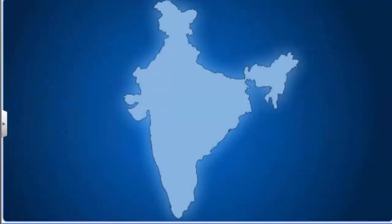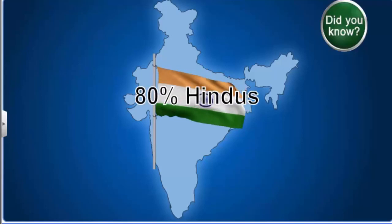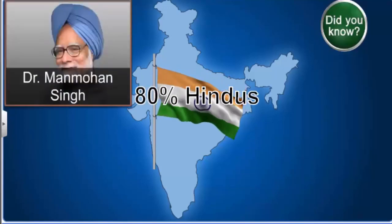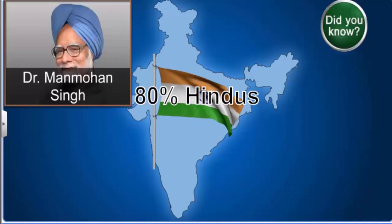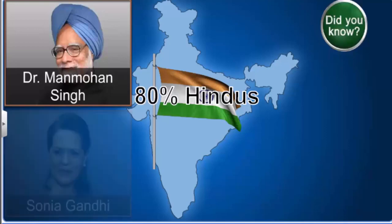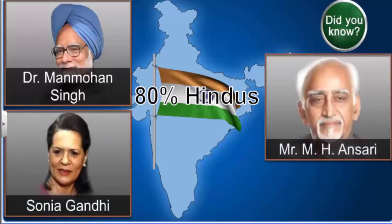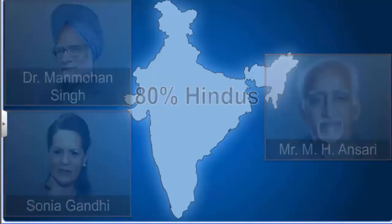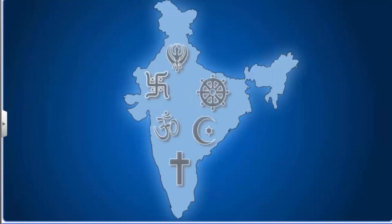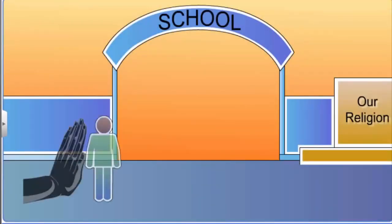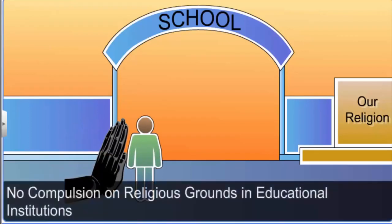Did you know India is an 80% Hindu country, yet its prime minister Dr. Manmohan Singh is a Sikh. The leader of its largest political party, the Congress, is Ms. Sonia Gandhi, who is a Catholic of Italian origin, and the country's vice president is a Muslim. Similarly, educational institutions managed by private bodies cannot compel anyone to participate in any religious instruction or attend any religious worship.